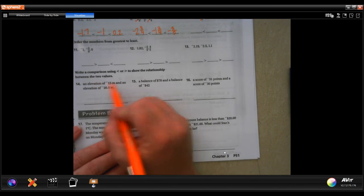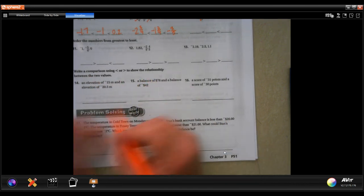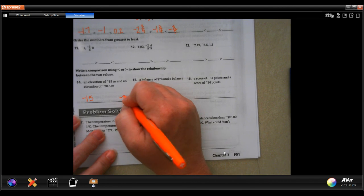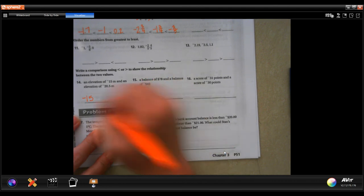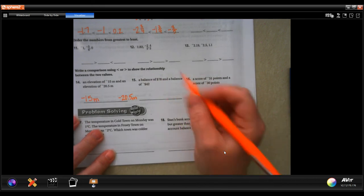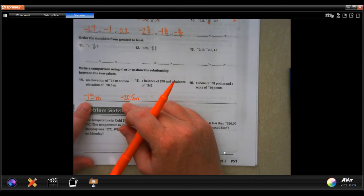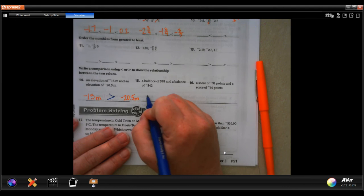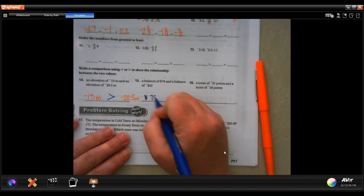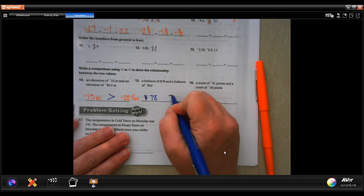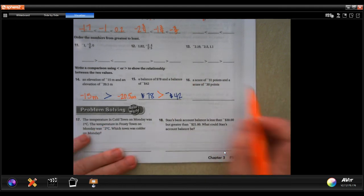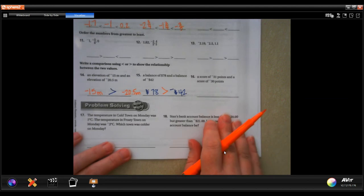So we're going to go down here. We're going to write a comparison to show the relationship between the two values. So elevation of negative 15 meters, so negative 15 meters, and negative 20.5 meters. Make sure we've got that M in there for meters. Well, I know that 20 is bigger than 15, but they're negative. Does that mean that 15 is bigger in this case. Now we have $78 and negative $42. Well, positive is always going to be bigger than a negative. You guys do number 16.